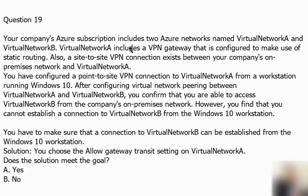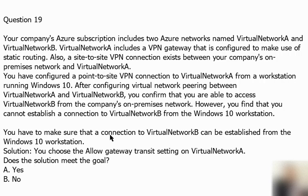Question number 19. Your company's Azure subscription includes two Azure virtual networks: Virtual Network A and Virtual Network B. Virtual Network A includes a VPN gateway configured for static routing, and a site-to-site VPN connection exists between your company's on-premises network and Virtual Network A. You have also configured a point-to-site VPN connection to Virtual Network A from a workstation running Windows 10. After configuring virtual network peering between Virtual Network A and Virtual Network B, you confirm that you are able to access Virtual Network B from the company's on-premises network. However, you find that you cannot establish a connection to Virtual Network B from the Windows 10 workstation.